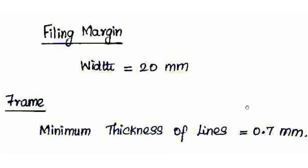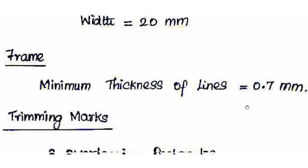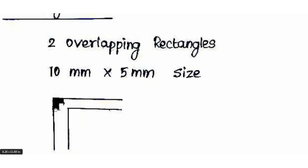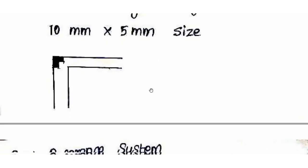Next is the frame. The thickness of the frame line is 0.7 mm as per IS 10711. Next are trimming marks. Trimming marks are located at 4 corners of the sheet and consist of two overlapping rectangles of size 10 mm × 5 mm at each corner.